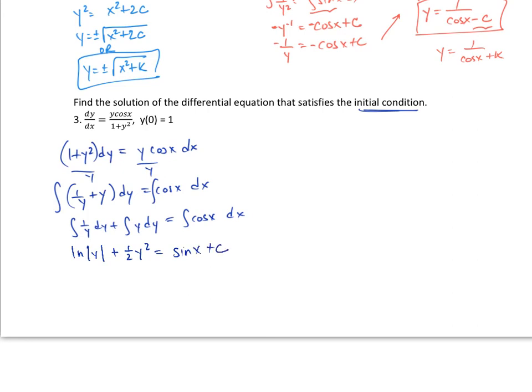Okay, at this point you could say, oh I got to solve for y. But that's going to be very, very, very difficult. So don't, because you won't be able to. But you know in the initial condition, when x is 0, y is 1. So let's go ahead and put that in there and see what happens. Again, when I said from our initial condition right here, when x is 0, y is 1. So let's see what happens. I'll get ln 1 plus 1 half of 1 squared equals sine of 0 plus c.